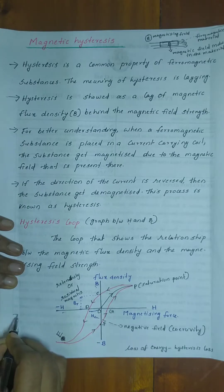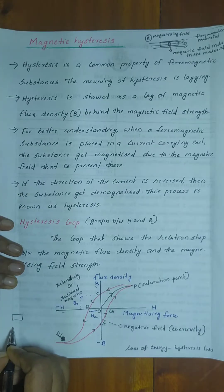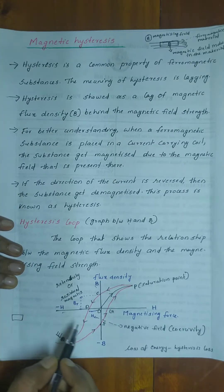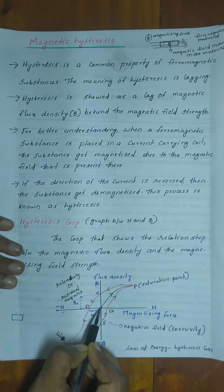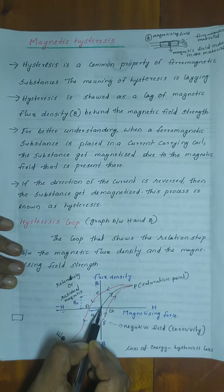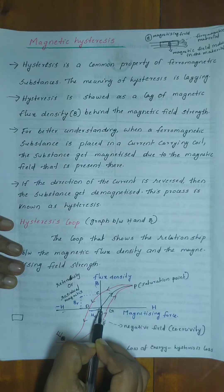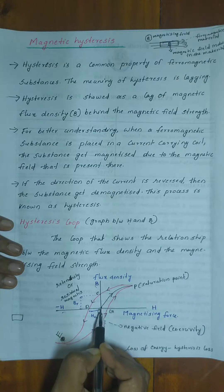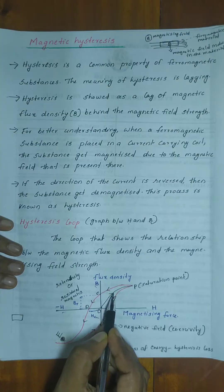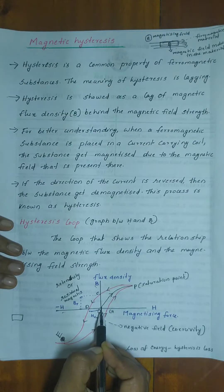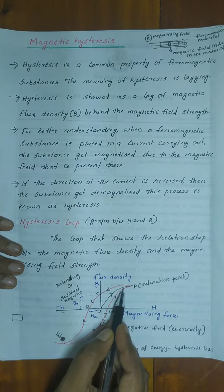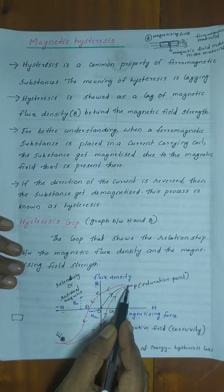We place a ferromagnetic material in the setup. When there is no external magnetizing force, H is zero. When H is zero, the flux density is also zero. As we increase the magnetizing force, the flux density increases along the path O to P.